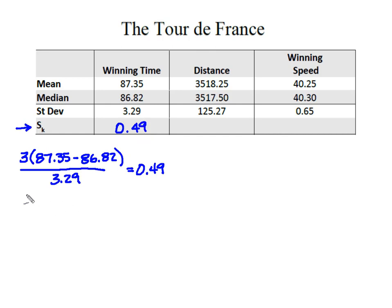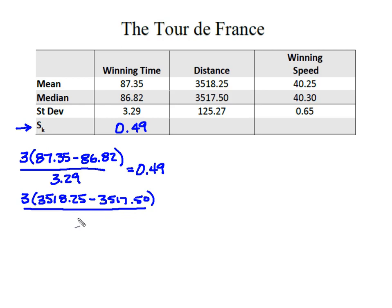For distance, I'm going to do the same thing. I take three times the mean of 3,518.24, subtract the median of 3,517.50, and divide by the standard deviation of 125.27. That gives me a Pearson's of 0.02 for distance.